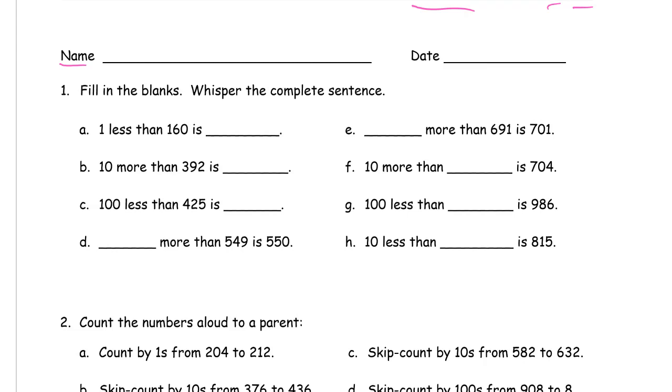One less than 160 is 159. 10 more than 392 is 402. 100 less than 425 is 325. And one more than 549 is 550.